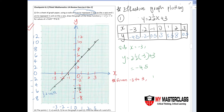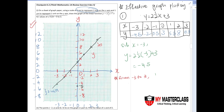Draw a straight line through the points using a ruler. It is important to label the line — write y = 2.5x + 3 next to it. That completes part one of the question.